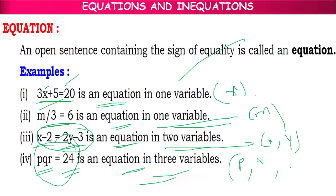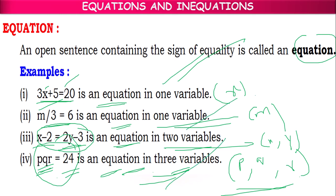p value unknown, q value unknown, r value unknown — means we have three unknown variables, three variables are open for different values, so this is an equation in three variables. We can have equations either in one variable, two variables, three variables, or many variables. Based on the number of variables, we can name that equation in terms of variables.